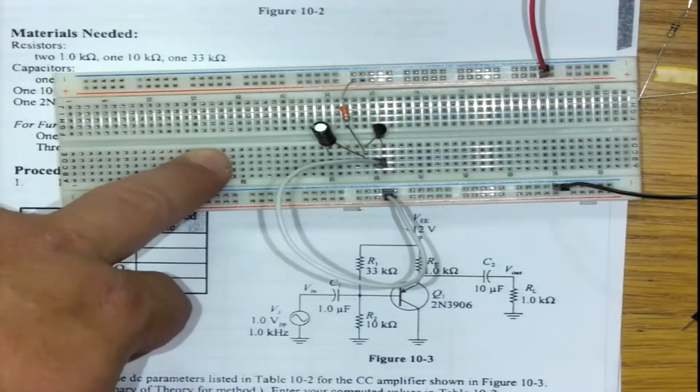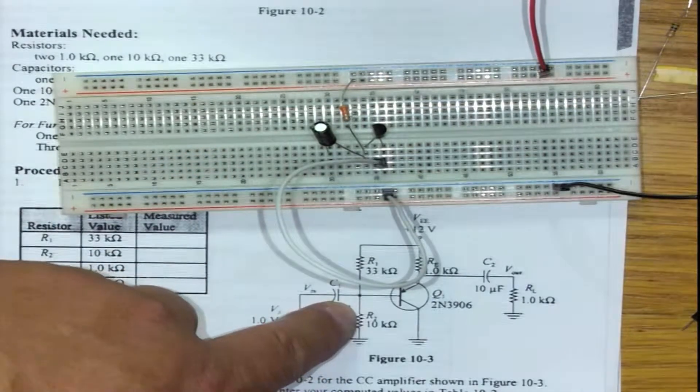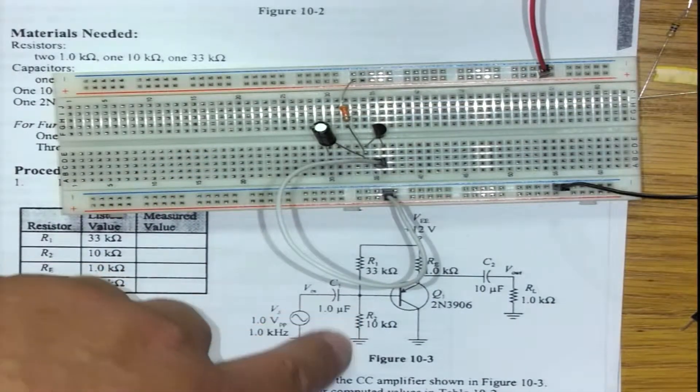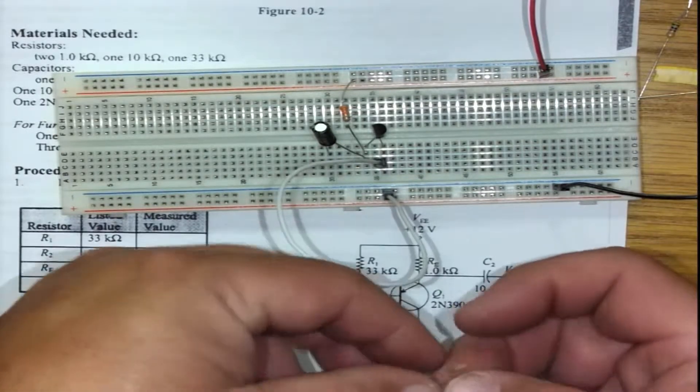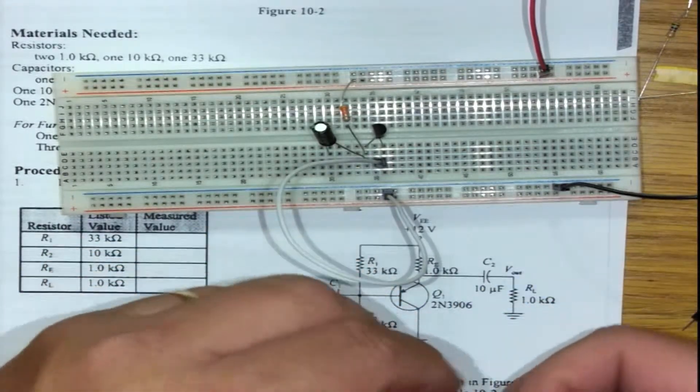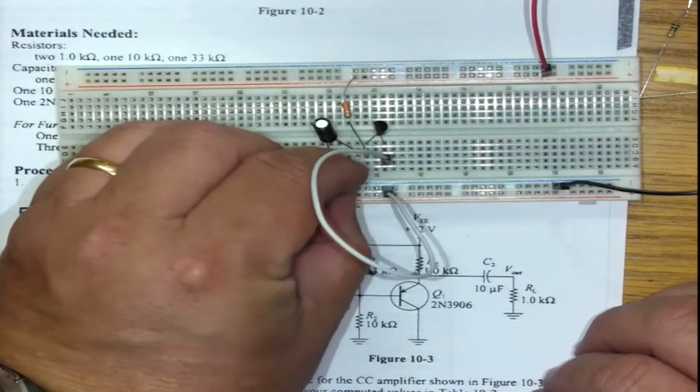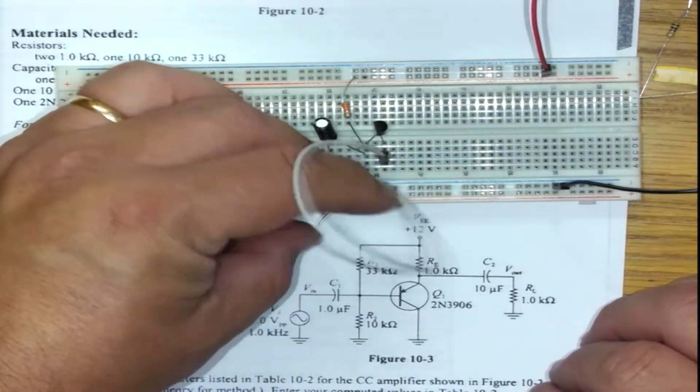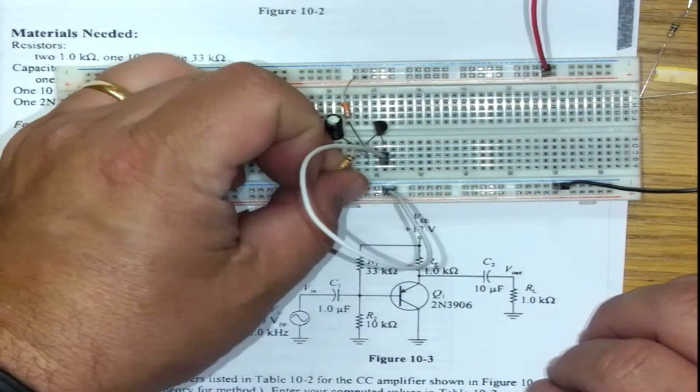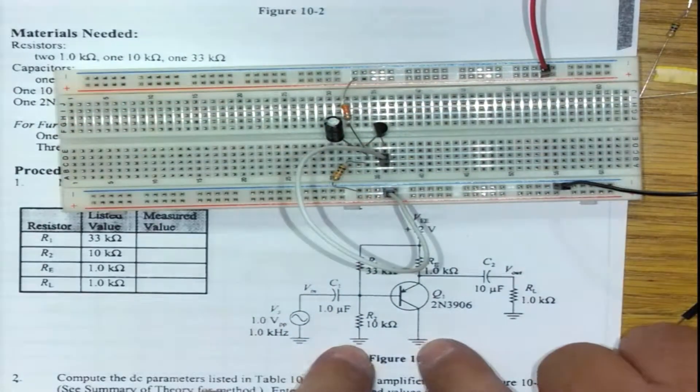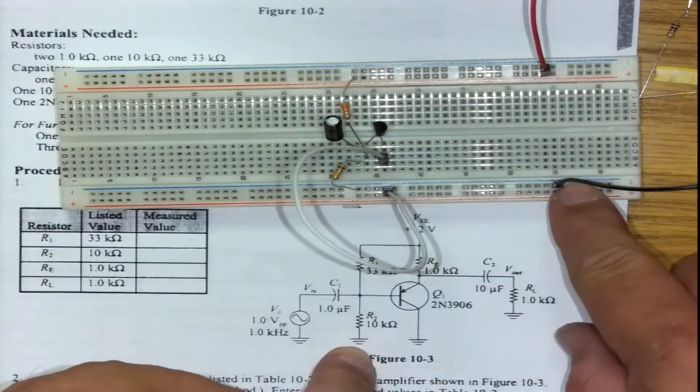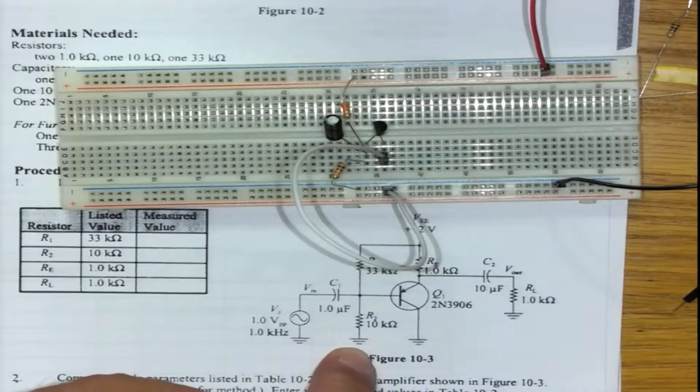Then we have a 10 kilohm resistor connecting from the base to ground. So 10 kilohm brown black orange, and that resistor connects to the base but also connects to the ground. You'll notice these two grounds are now connected together as well, connecting to the black which goes to my power supply.